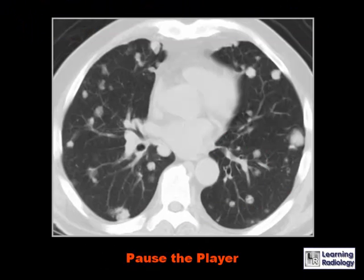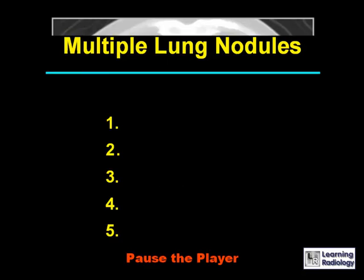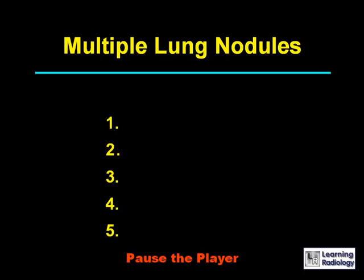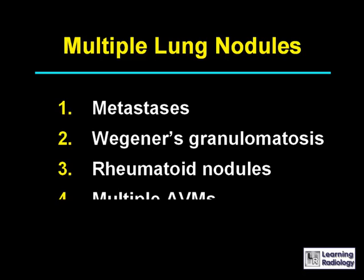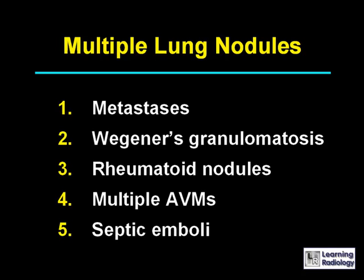This is the next differential: multiple lung nodules. There are five causes: metastases, Wegener's granulomatosis, rheumatoid nodules, multiple AVMs, and septic emboli.